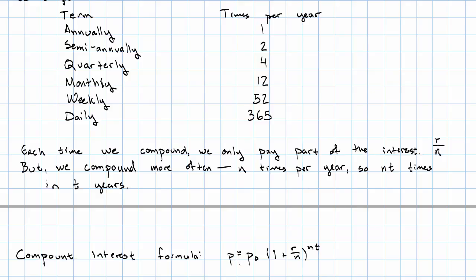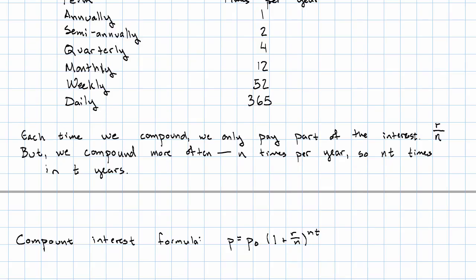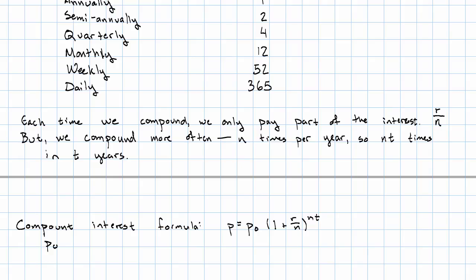This gives us a compound interest formula. The amount that we pay back at the end is the amount we started with. And then each time we compound, we multiply by one plus a little piece of the interest. And we do that nt times, where p0 is the starting amount, r is the interest rate, and n is the number of times per year. And note, t is the time in years.